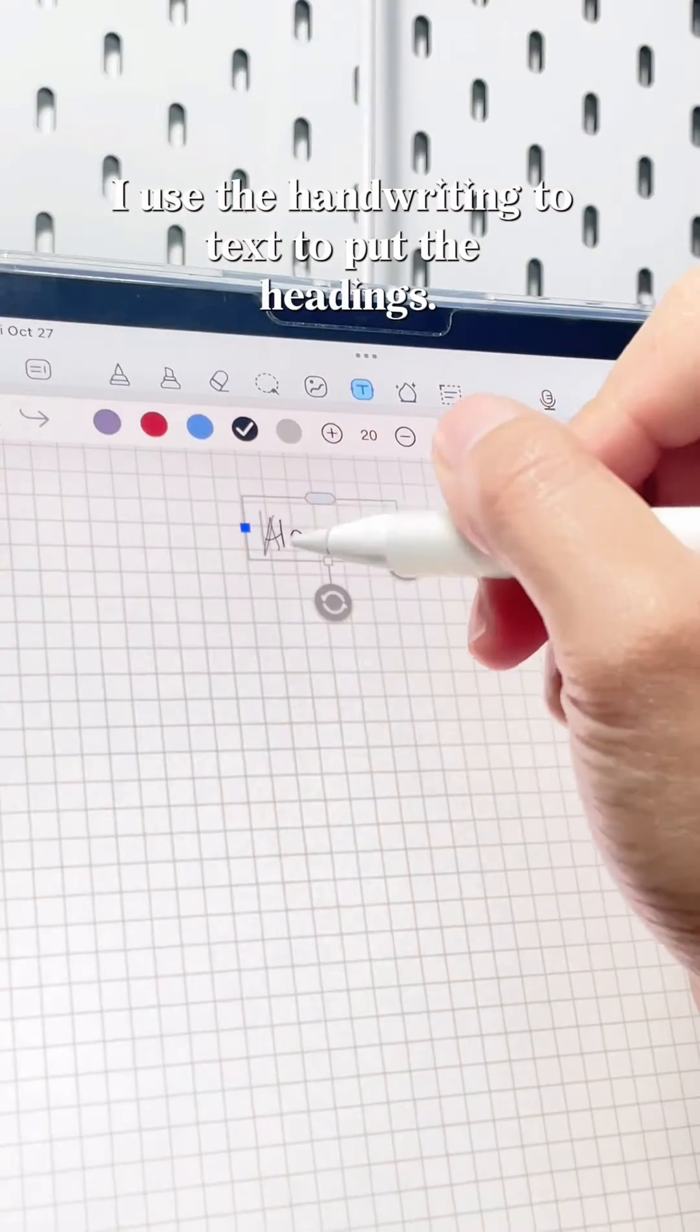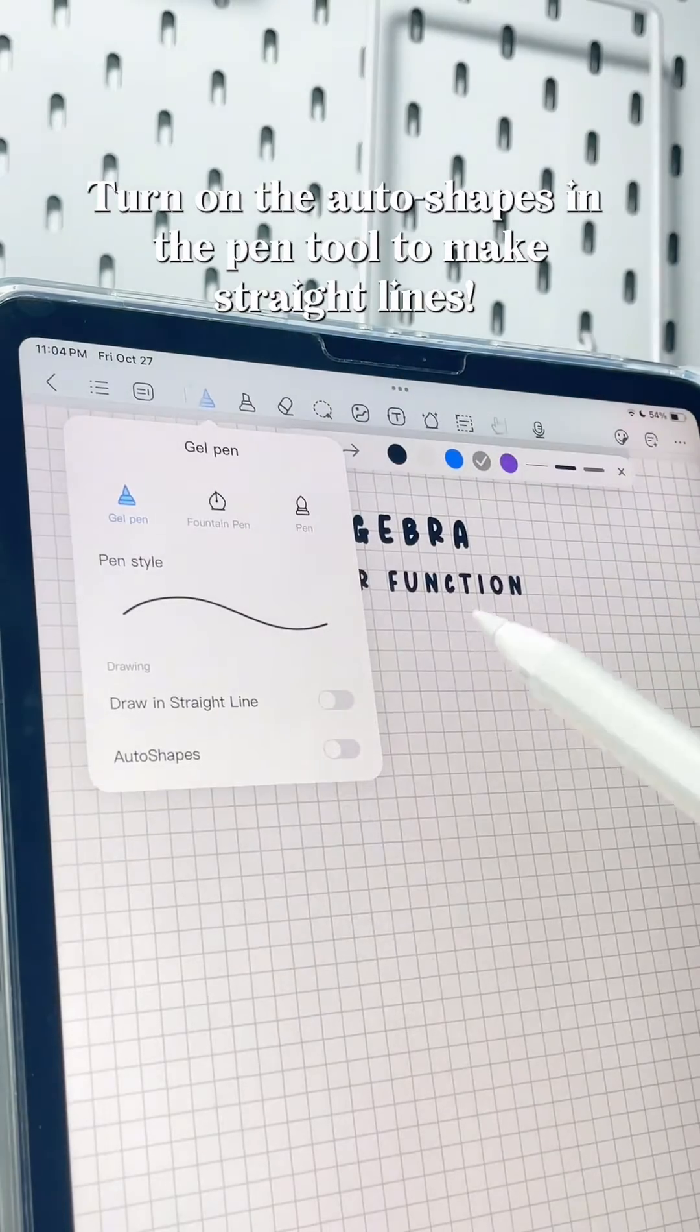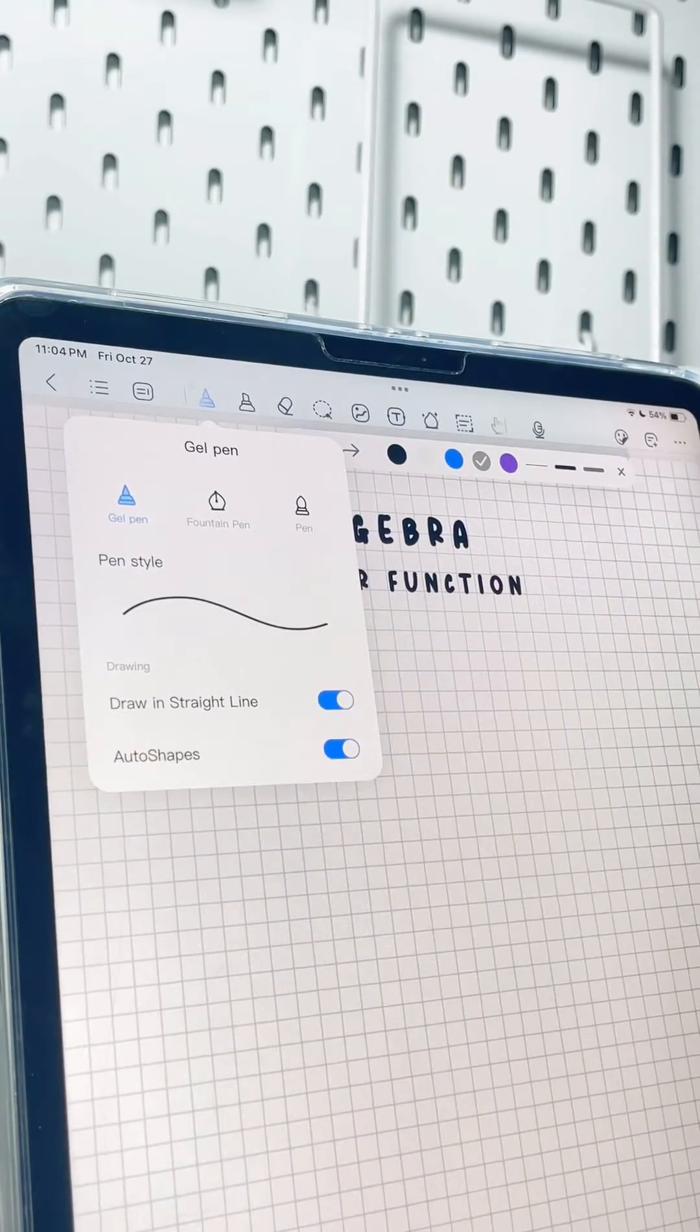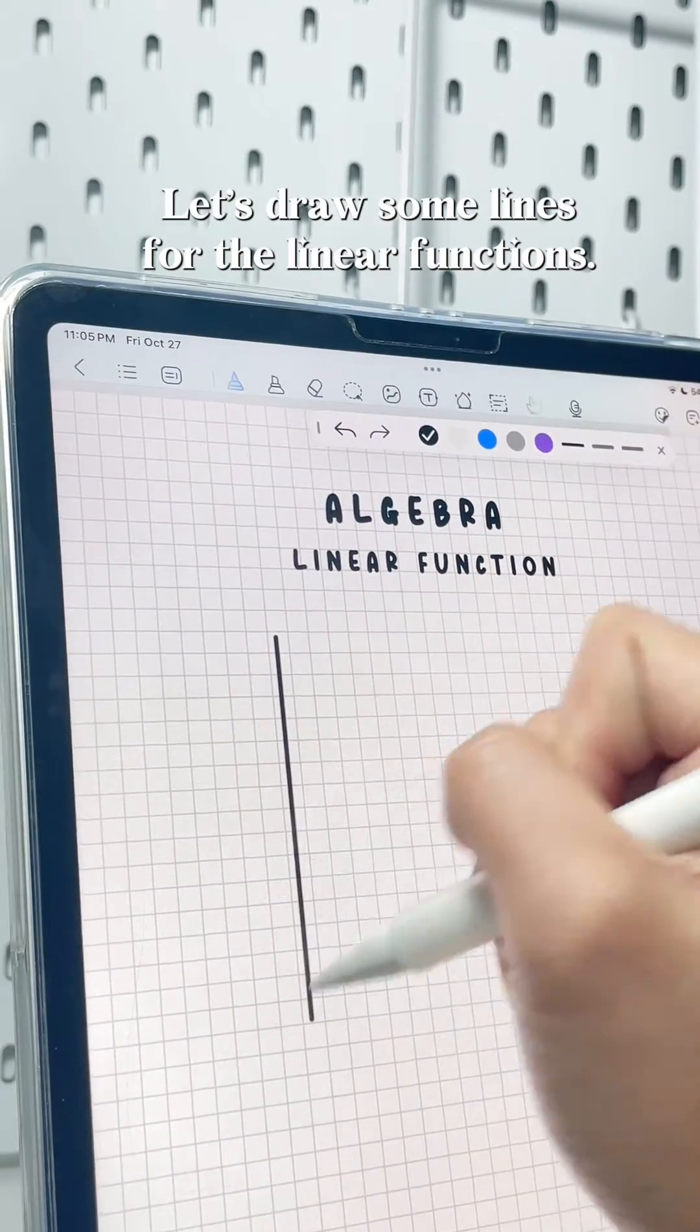I use the handwriting to text to put the headings. Turn on the auto shapes in the pen tool to make straight lines. Let's draw some lines for the linear functions.